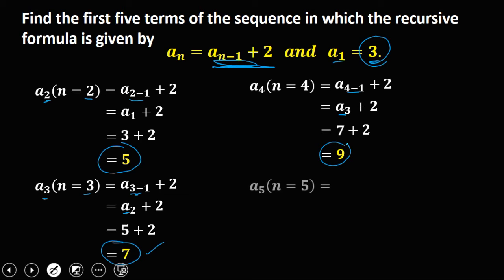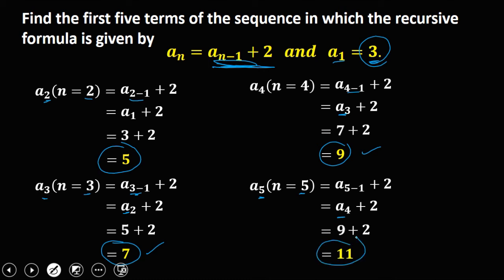Then for a sub 5, n equals 5. We have a sub 5 minus 1 plus 2, then 5 minus 1 is 4, plus 2. Substituting the value of a sub 4, which is 9, so 9 plus 2, and a sub 5 is now 11. So these are the first 5 terms: 3, 5, 7, 9, and 11.